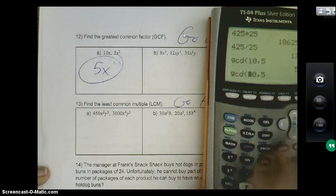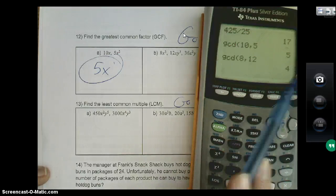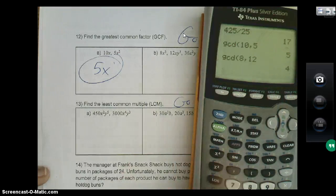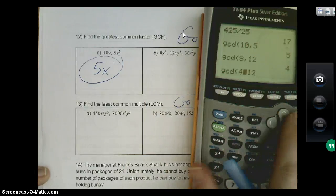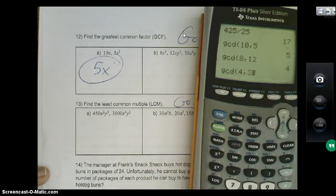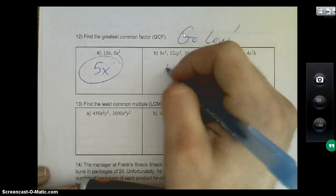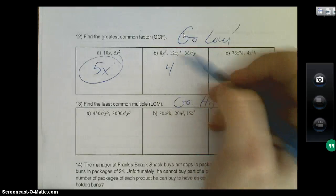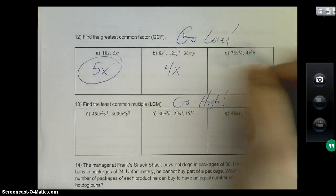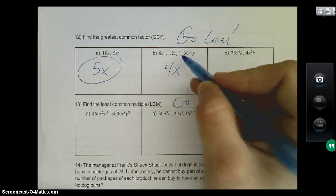Now for GCD of three numbers, what you have to do is type in your first two: 8 comma 12, and we get 4. Great, but now I want to compare 4 to 36, so I'm going to do this again. Come over here, I'm going to replace the 8 with 4, replace the 12 with 36, we get 4. So my GCF here is just plain old 4.